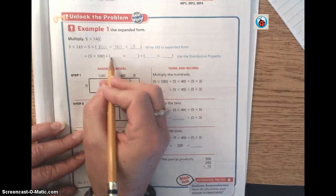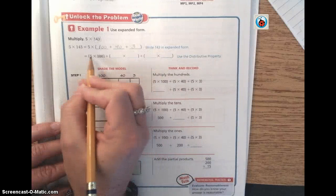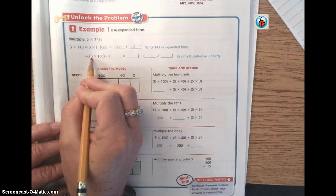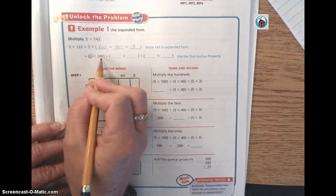Then we're going to break each of these into their own separate multiplication problems using the other single factor, the 5. So the first part's already done for us, and they've already done 5 times 100.